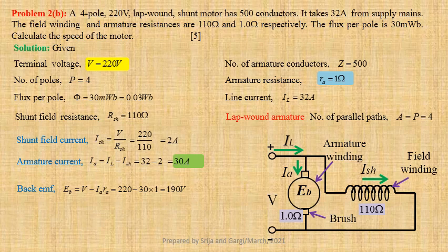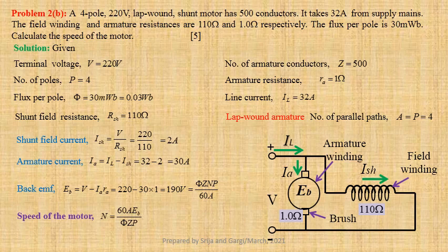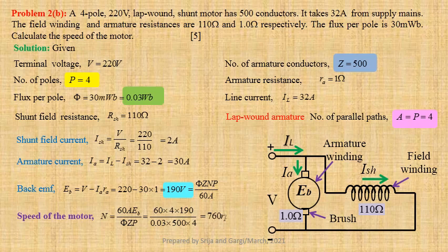We know back EMF EB equals 5ZNP divided by 60A. From this, the expression for speed of the motor is N equals 60A times EB divided by 5ZP. Substituting values: 60 into 4 into 190 divided by 0.03 into 500 into 4, that is equal to 760 RPM.